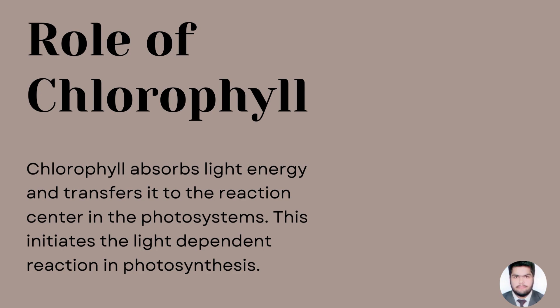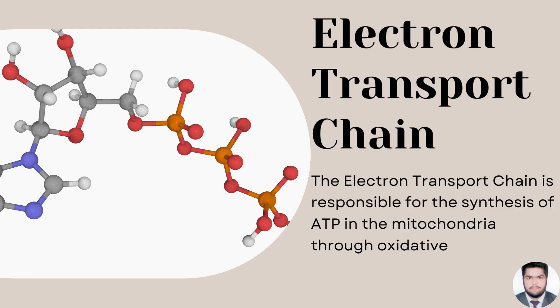Role of chlorophyll: chlorophyll absorbs light energy and transfers it to the reaction center in the photosystems. This initiates the light dependent reactions in photosynthesis. The electron transport chain is responsible for the synthesis of ATP through oxidative phosphorylation.